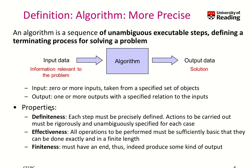An algorithm has three key properties: definiteness, effectiveness, and finiteness. Definiteness means each step must be precisely defined — unambiguously specified for all possible cases on the input or intermediate data, such that they can be executed. Effectiveness means all operations must be sufficiently basic that they can be done exactly, with 100% accuracy, and in a finite time. Finally, finiteness means the algorithm must have an end — it must produce some kind of output, because otherwise it's worthless since you never get a solution.